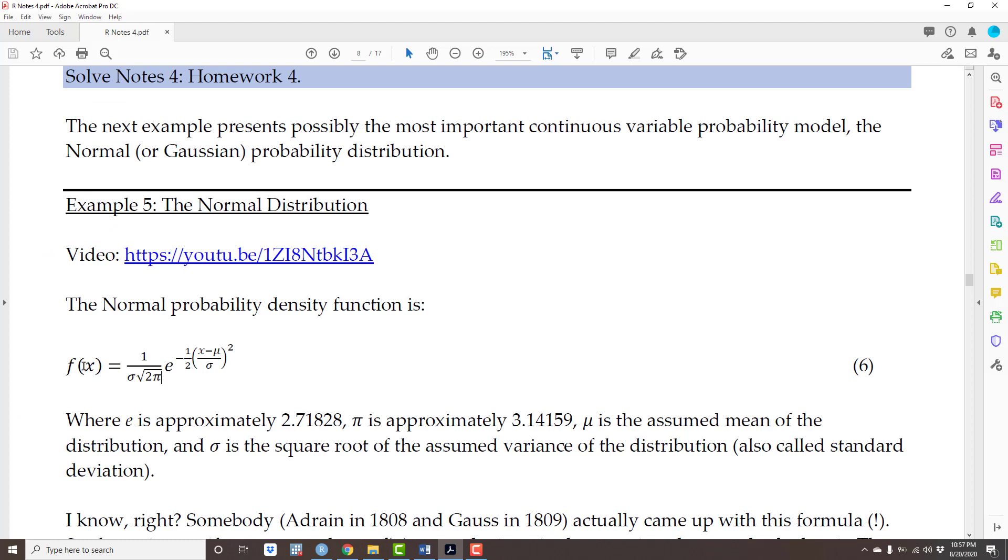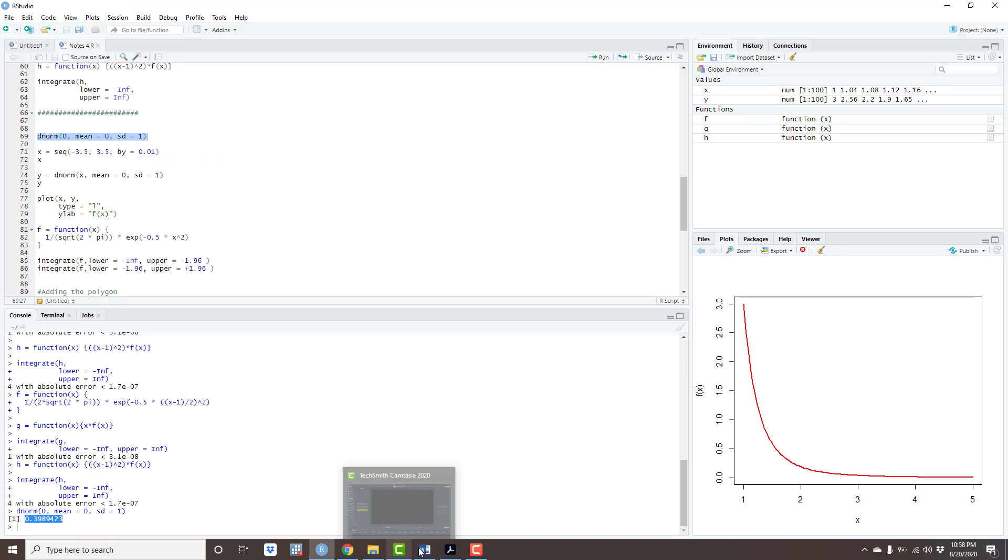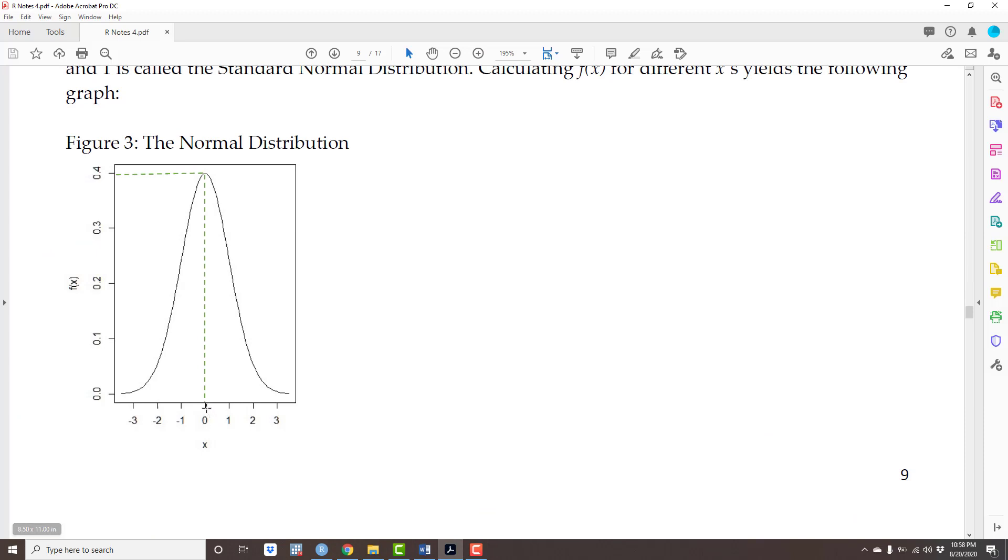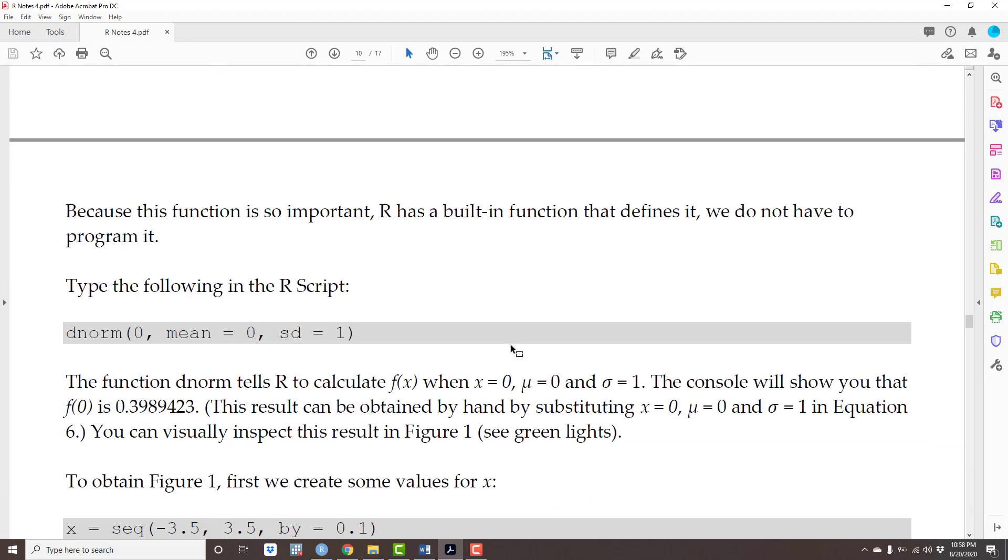So let's confirm that: dnorm, mean = 0, SD is 1. There you go, 0.39. What this means is if you plug in 0 here, and if μ is 0 and σ is 1, substitute it here, you're gonna get 0.39. You can also see that in the graph you generated. If you look at 0 here, this is 0.39 in the f(x) here.